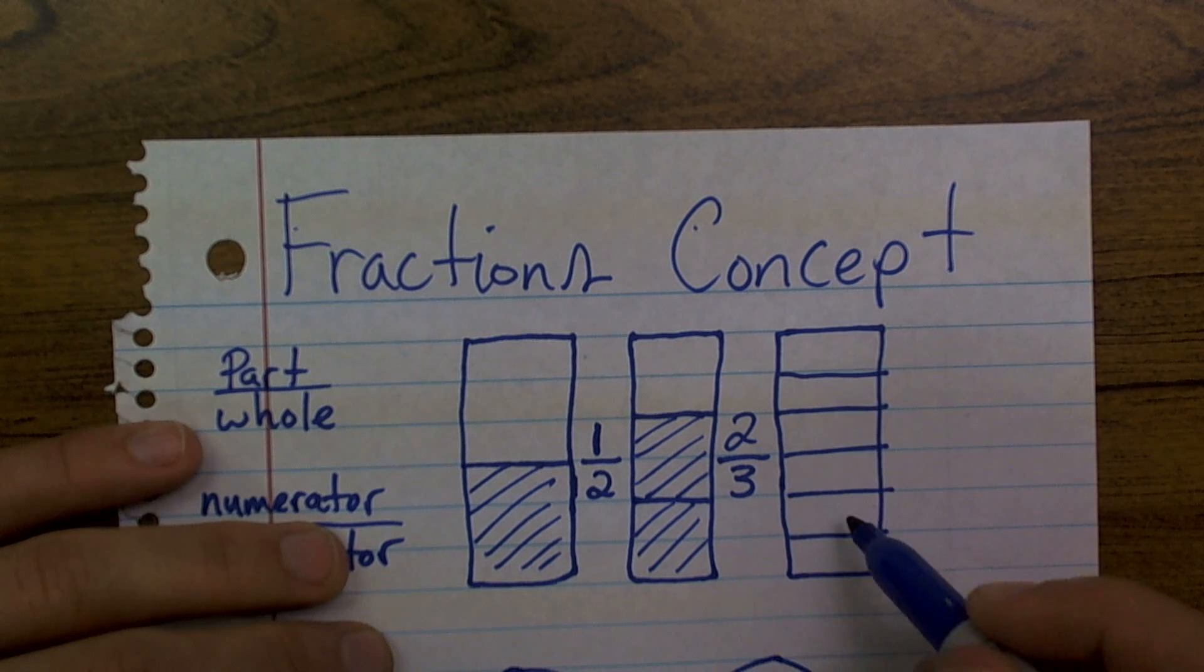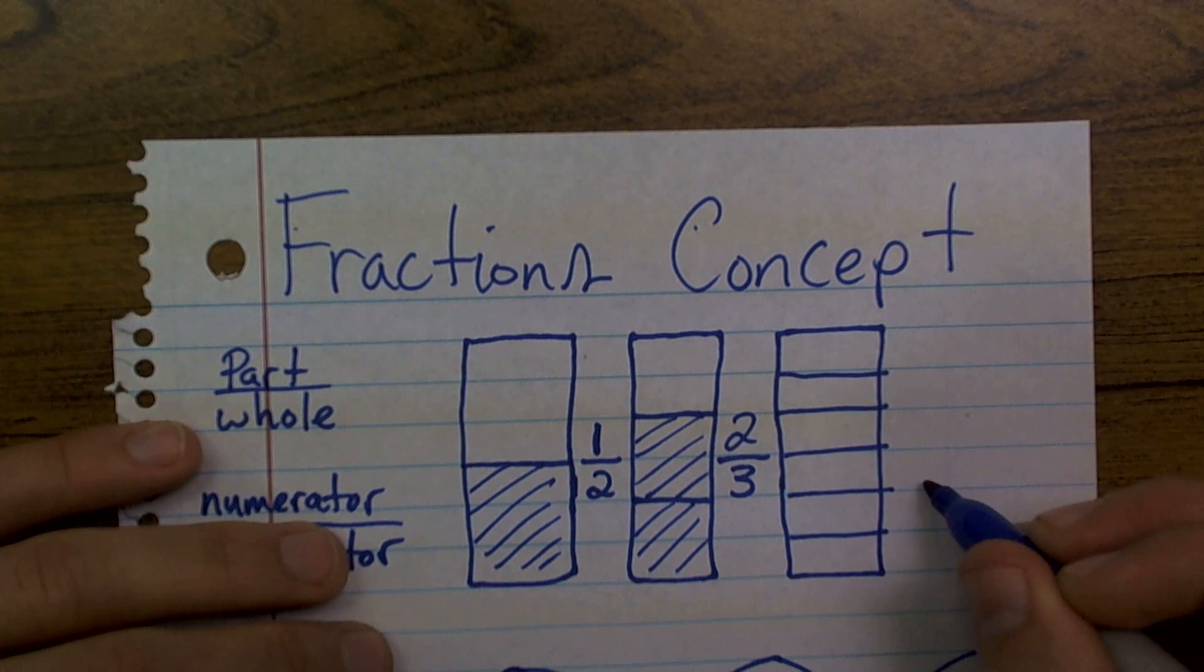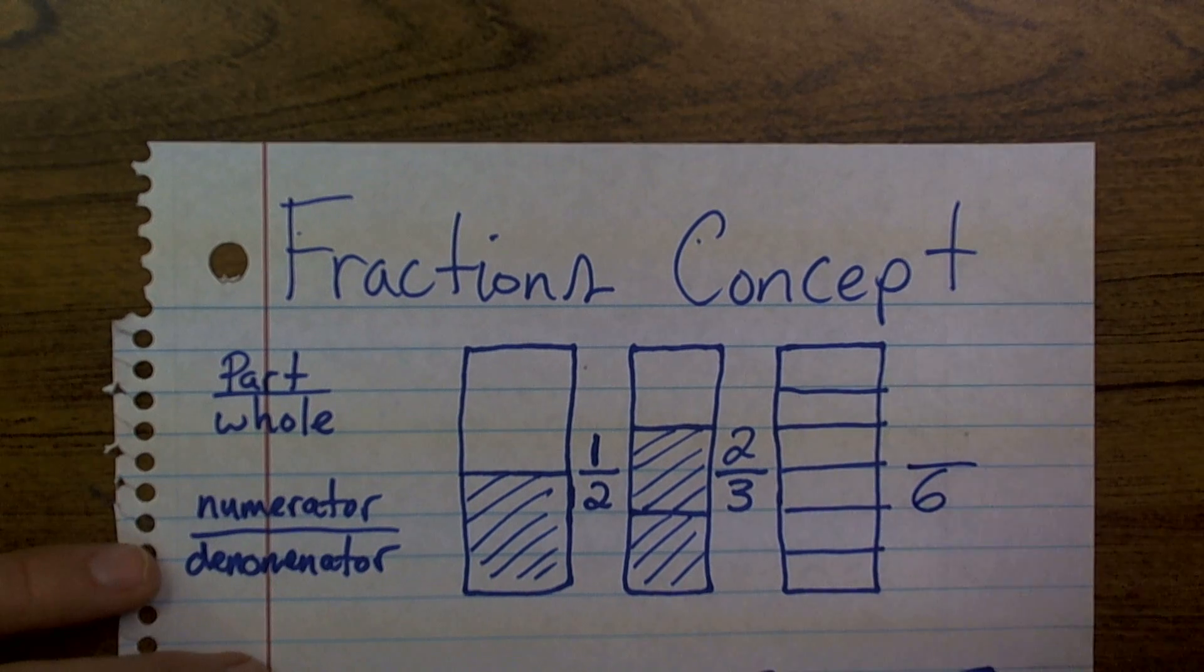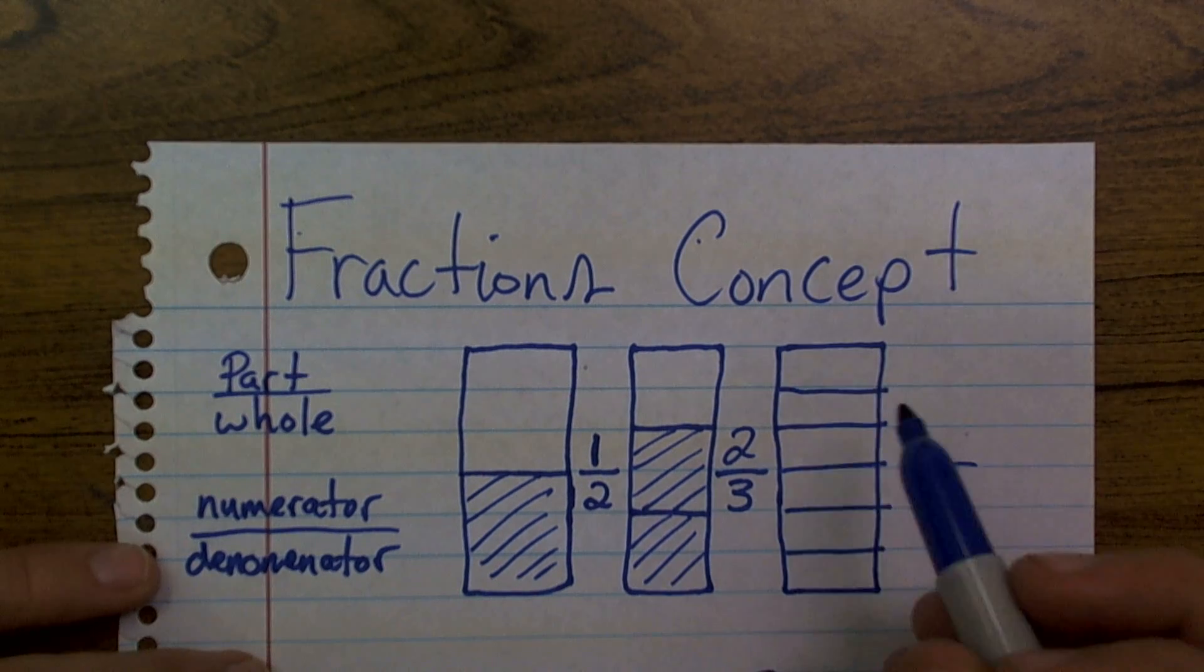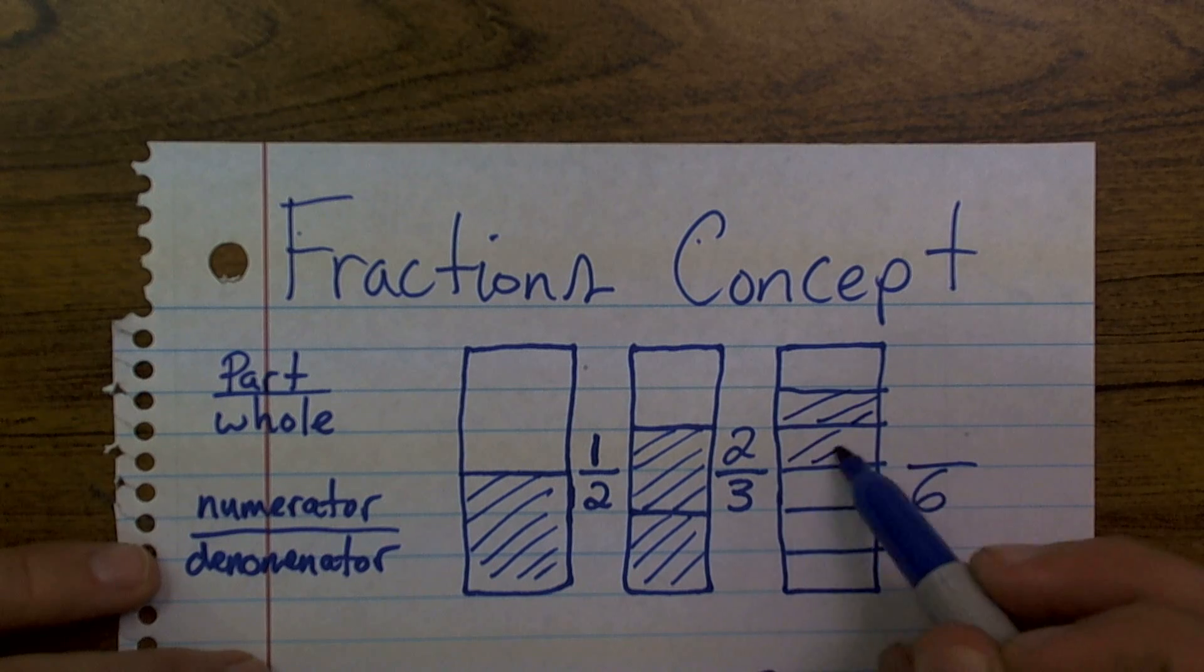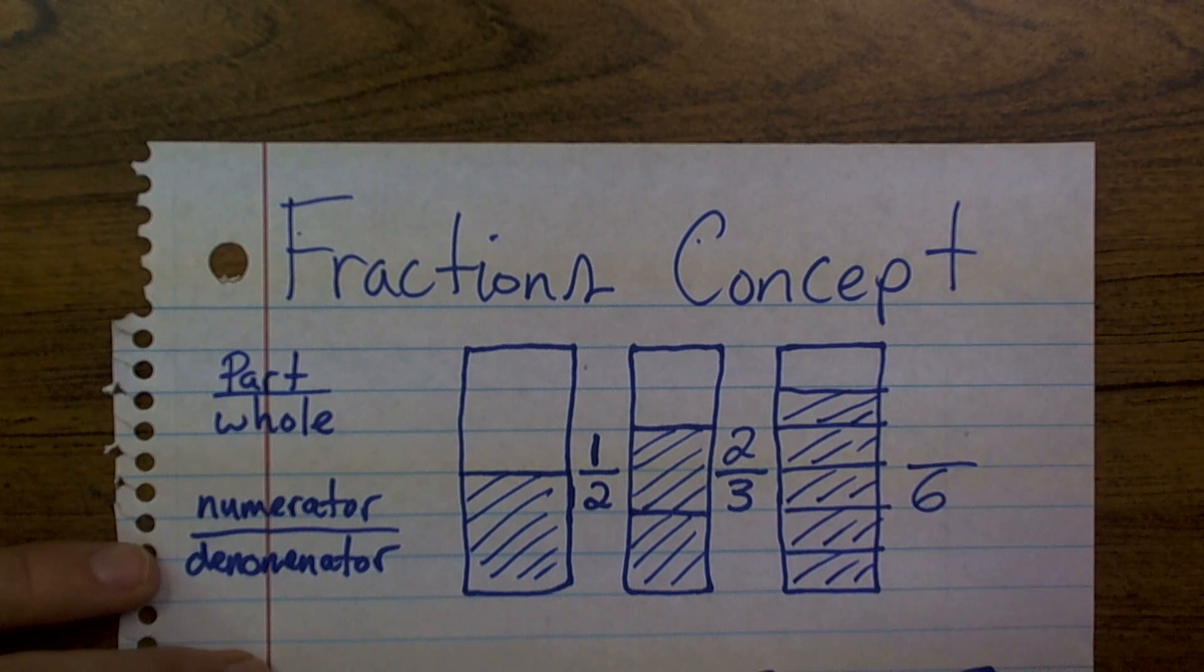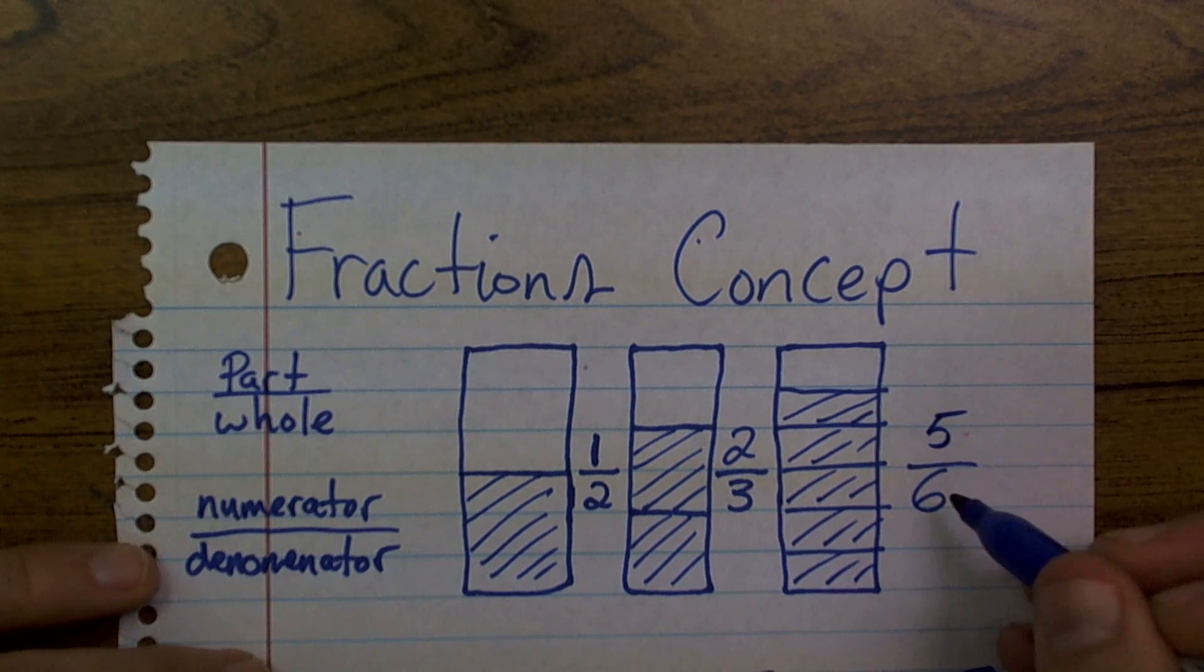So therefore, I'll have one, two, three, four, five, six. And so therefore, I'll have sectioned off into six pieces. And let's say I want to highlight five of them. Therefore, the fraction of this bar is going to be five over six.